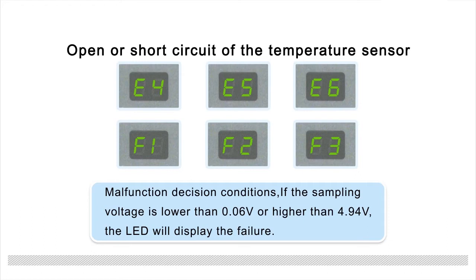Malfunction decision conditions: If the sampling voltage is lower than 0.06 volts or higher than 4.94 volts, the LED will display the failure.